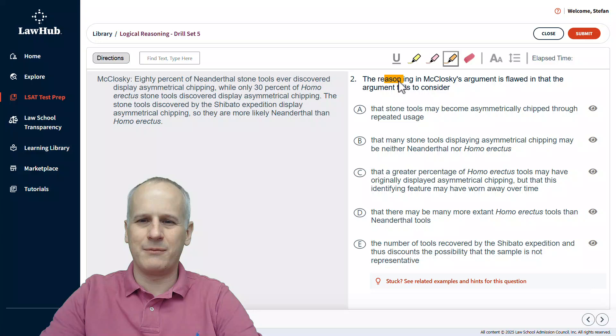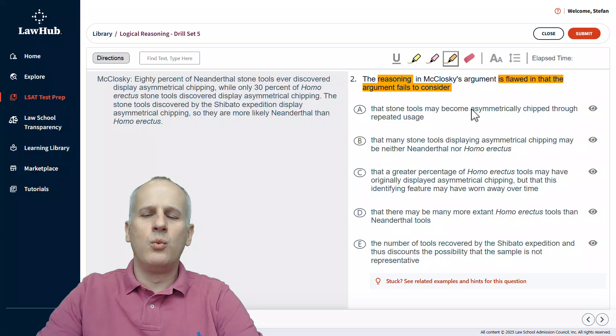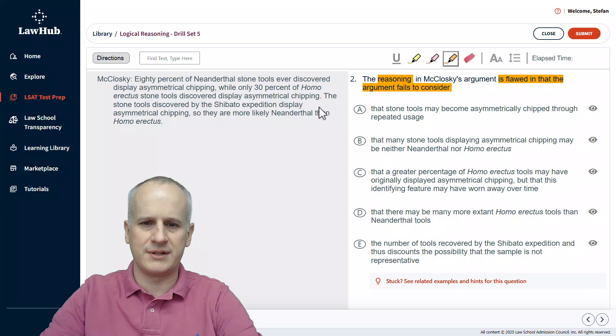So we're going to highlight kind of piecemeal here. Reasoning is flawed in that the argument fails to consider. We need to split this up a little bit because we want to focus on what the argument isn't considering logically, hopefully as a prediction before we even start to look at the answer choices here.